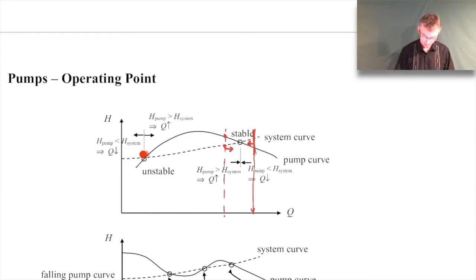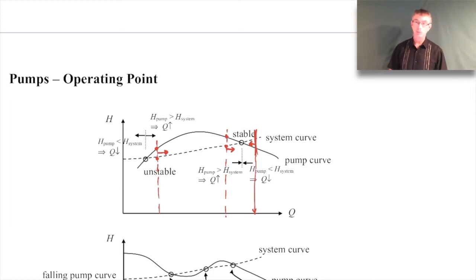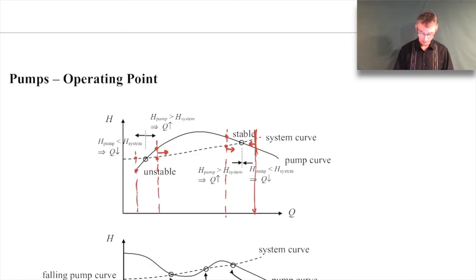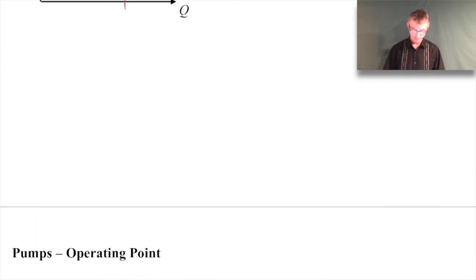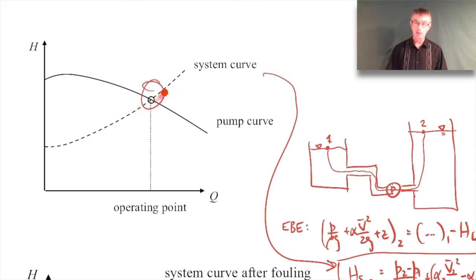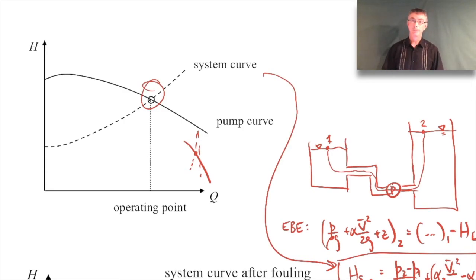Typically we would prefer to avoid these kind of multiple operating point scenarios. It's much better to have a situation where there's a clear single operating point. For stability purposes, you want the intersection to be as steep as possible - you'd like your pump curve to go steeply downward and your system curve to be steep as well. Because if you push to one side, there's a big difference between what your system needs and what your pump can provide, and it'll quickly push you back to that operating point.